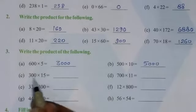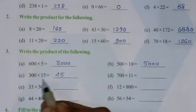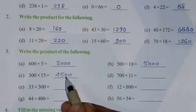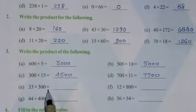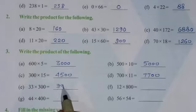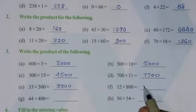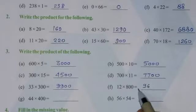Here, 11 times 7 is 77. Now put 2 zeros. 3 into 33, you will get 99. Now put 2 zeros. 12 times 8 is 96, and put 2 zeros.